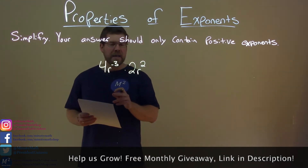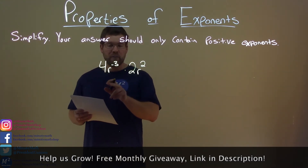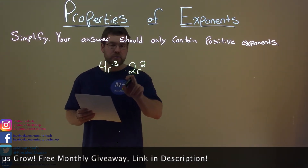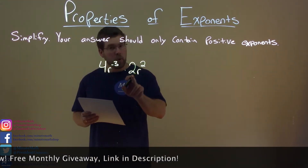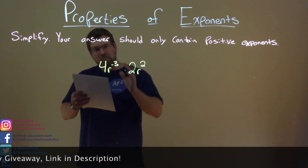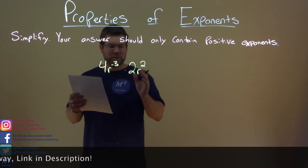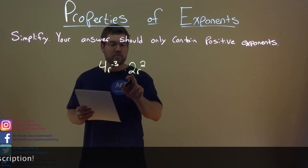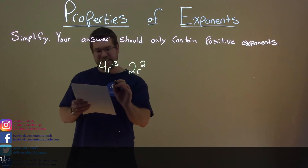First thing I'm looking at is the coefficients, 4 and 2. We need to multiply them to make our new coefficient and combine it. So, 4 times 2 is 8.